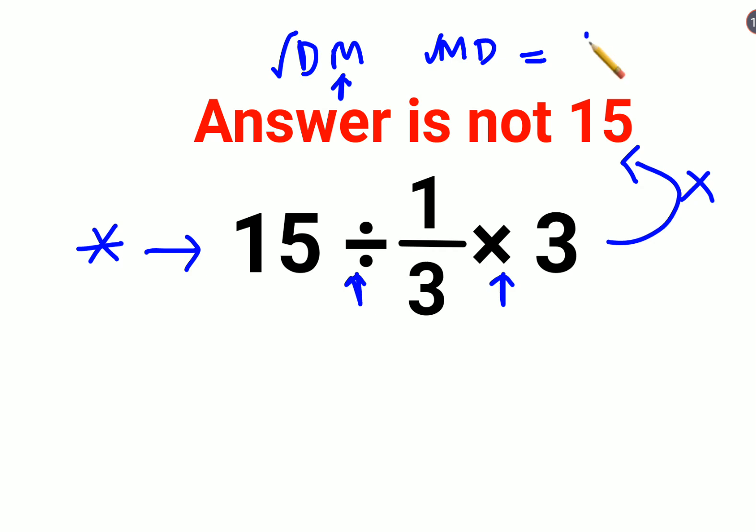So you just have to always go from left to right. Whatever operation happens to come first on your left-hand side has to be done first. So first we have division in place.